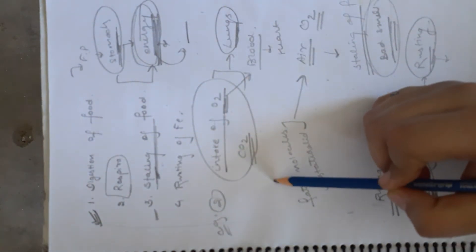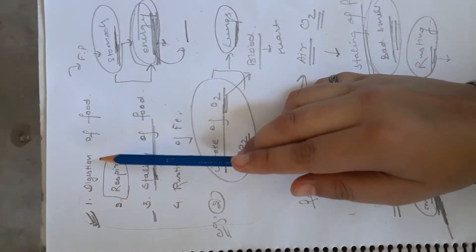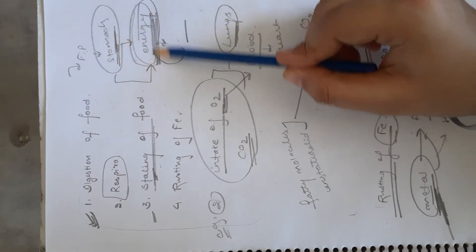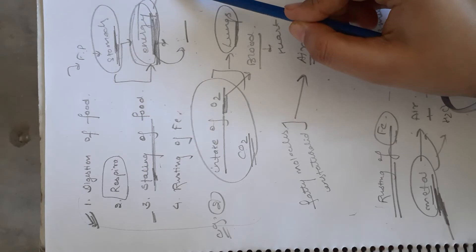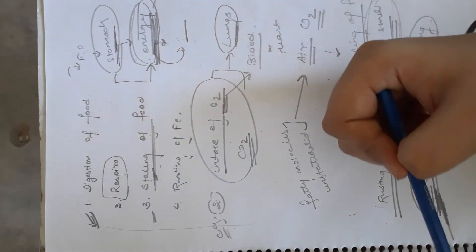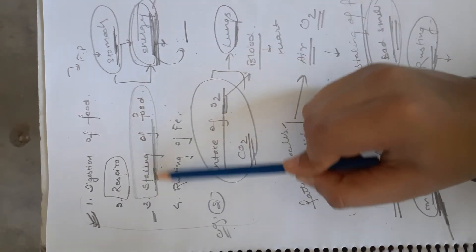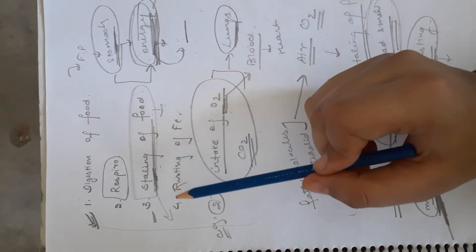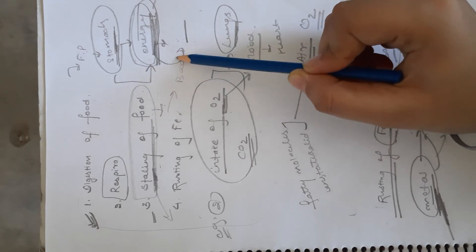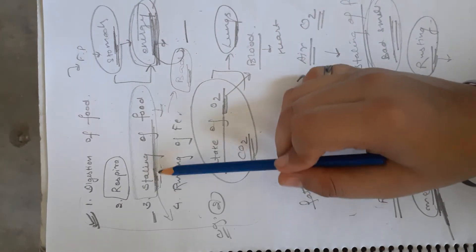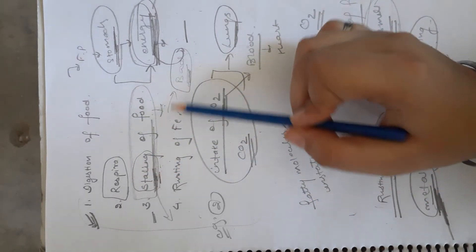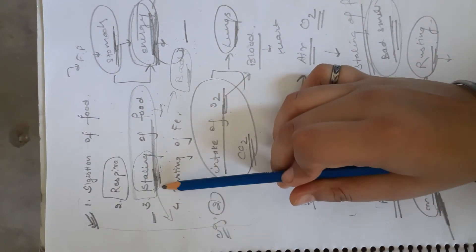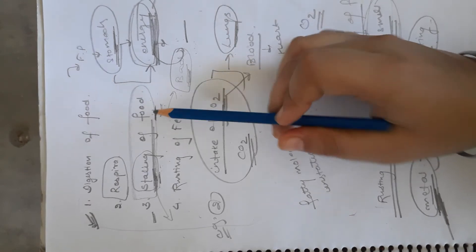We are discussing how we can know that some chemical reaction is taking place. First, digestion of food — we get energy from food when it breaks down in the stomach. Energy is a characteristic of chemical reaction. Same for respiration. For staling of food, the smell indicates a change in state, because first the food is in a healthy state but it changes to a bad, unhealthy state. From this, we know some chemical reaction takes place.